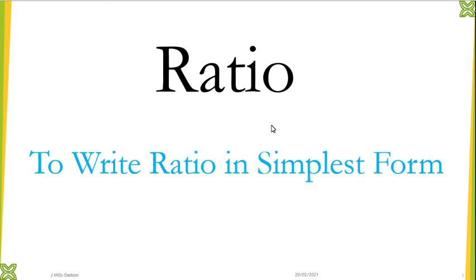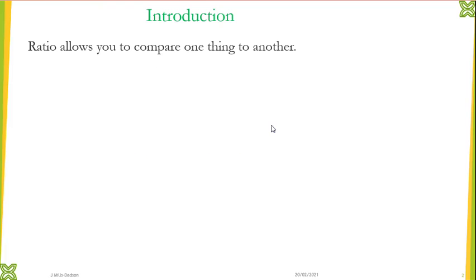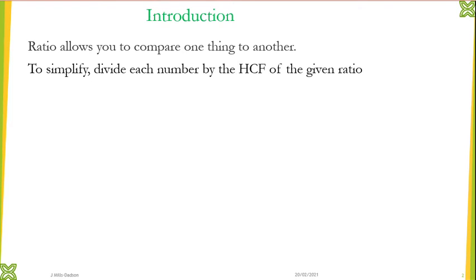Hello viewers and welcome to all new people to this channel. In today's lesson we'll be talking about ratio and how to write ratio in simplest form. Ratio allows you to compare one thing to another, and to simplify ratio the easiest way is to divide each of the numbers in the ratio by the highest common factor. Highest common factor simply means the biggest number that could go into the given numbers.